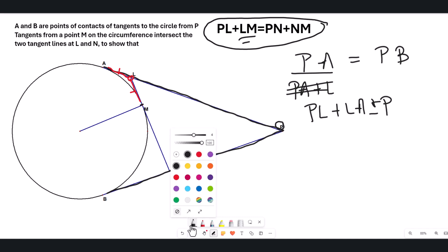PN, then NB, PN plus NB. And then I can replace this LA or AL by who? LM. So PL plus LM.